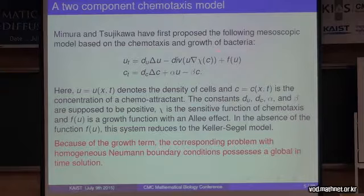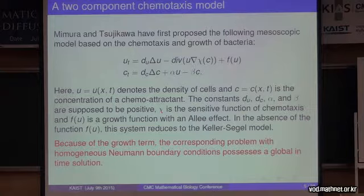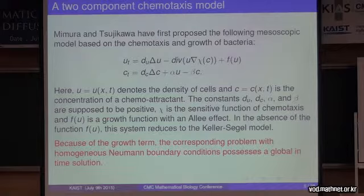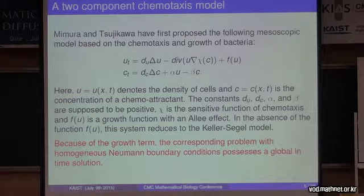Here u denotes the density of cells and c the concentration of a chemotactic attractant. All the constants here, d_u, d_c, alpha, beta are positive. Chi is a sensitivity function. And F is a growth function. In the absence of the function F, you have the Keller-Siegel model.